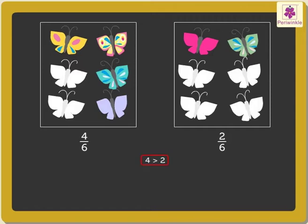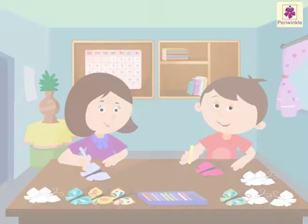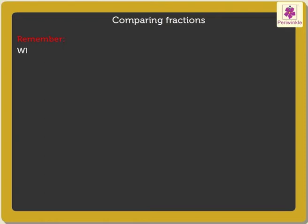As four is greater than two, we can say that four-sixths is greater than two-sixths, or two-sixths is less than four-sixths. This time Anaya colored more than Andy.